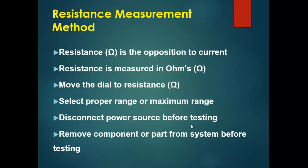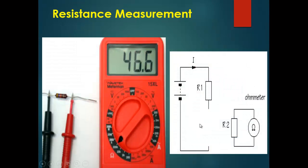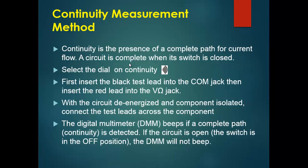Never test resistance in an energized circuit. It is always better practice to remove the component from the board to properly measure its resistance. As you can see in the picture, we first disconnect resistor R2, then select the dial on ohm, select the proper range, connect both probes across the resistance, and the meter shows the resistance value.